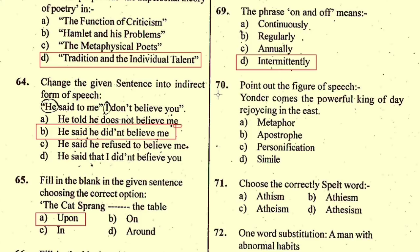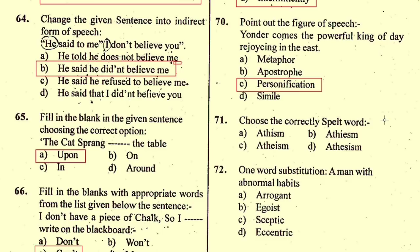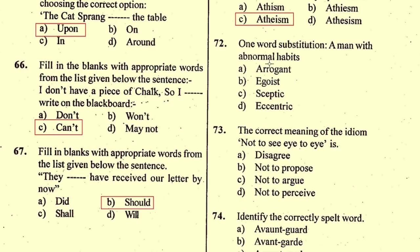Question number 70: Point out the figure of speech in 'Yonder comes the powerful king of day rejoicing in the east.' The figure of speech used is personification. Question number 71: Choose the correctly spelled word — it is given in option C, 'atheism', A-T-H-E-I-S-M, meaning 'anishwar vaad' in Hindi.